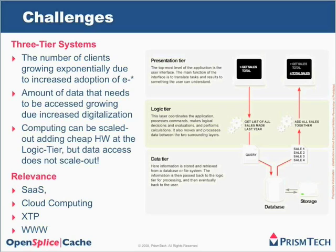The problem is that although we can scale out the logic tier by adding relatively cheap hardware and scale linearly in terms of business logic execution and scalability, we can't easily scale out the data tier. If we try, we either hit a bottleneck very quickly following the typical database route, or we end up spending lots of money very quickly. This issue is particularly relevant for companies applying paradigms such as software services, cloud computing, next-generation extreme transaction processing, or trying to reach the next level of performance in their web domain.